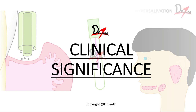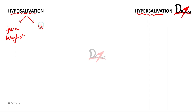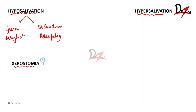Regarding the clinical significance of saliva, there are two categories: hyposalivation (decreased salivary flow) and hypersalivation (increased salivary flow). Decreased salivary flow can be temporary — due to fever or dehydration — or permanent, caused by obstructions like sialolithiasis or diseases like Bell's palsy. The condition called xerostomia, or dry mouth, is associated with hyposalivation.